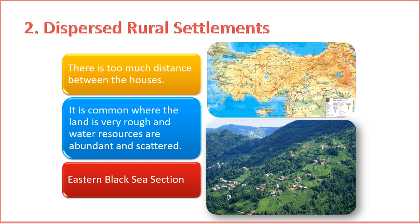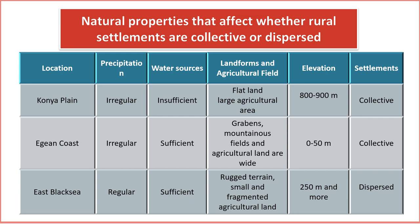Natural properties that affect whether rural settlements are collective or dispersed. Konya: rainfall is irregular, water resources are insufficient, the slope is low, agricultural areas are large, and settlements are generally located at an altitude of 800 to 900 meters and are clustered. Aegean Coast: rainfall is irregular, water resources are sufficient, agriculture is done in wide Graben plains between mountains consisting of Horsts, and mass rural settlements are at altitudes between 0 to 50 meters. Eastern Black Sea Coast: rainfall is more regular, water resources are sufficient, slopes are rugged, there are scattered rural settlements on fragmented agricultural lands, and settlement altitudes are 250 meters and more.